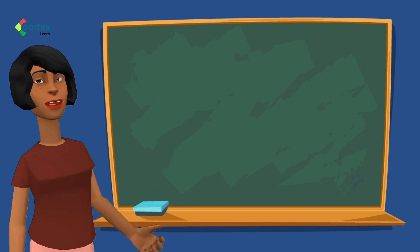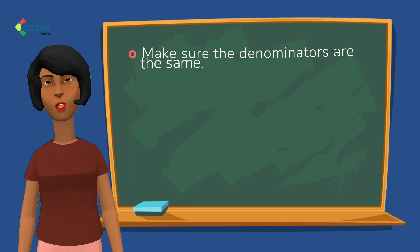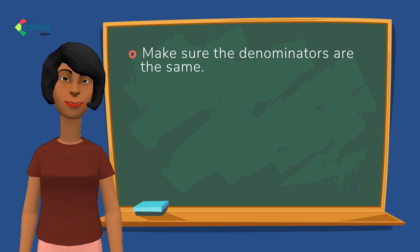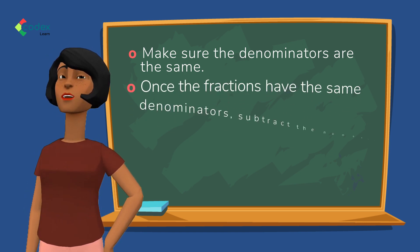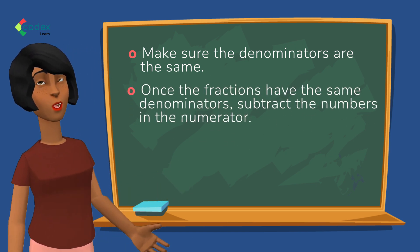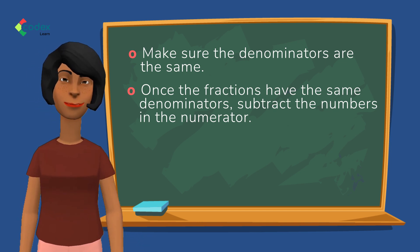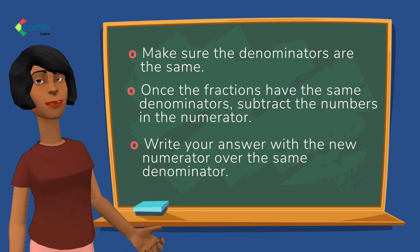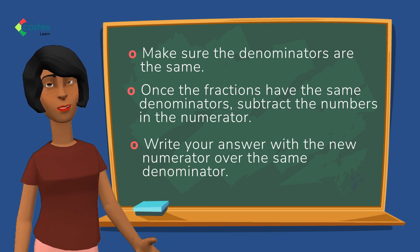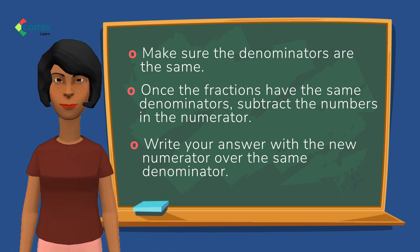One: Make sure the denominators are the same. Two: Once the fractions have the same denominators, subtract the numbers in the numerator. Three: Write your answer with the new numerator over the same denominator. It's that simple.